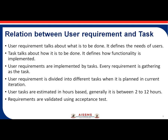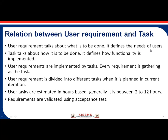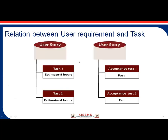The relationship between user requirement and task: user requirements talk about what is to be done — they define the needs of the user. Tasks talk about how it is to be done — they define how functionality is implemented. User requirements are implemented by tasks, and every requirement is gathered as a task. User requirements are divided into different tasks when planned in an iteration, and user tasks are estimated in hours, generally between 2 to 12 hours.